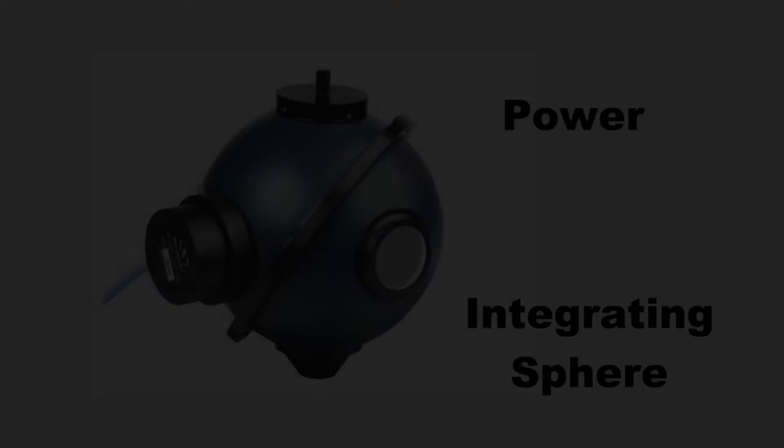All light measurements are based around the measurement of light power, so we will look at light power first. Light power measurement is made with an integrating sphere. An integrating sphere is a hollow spherical ball coated on the inside with a high-reflectance diffuse white coating that is broadband over a wide spectral range.